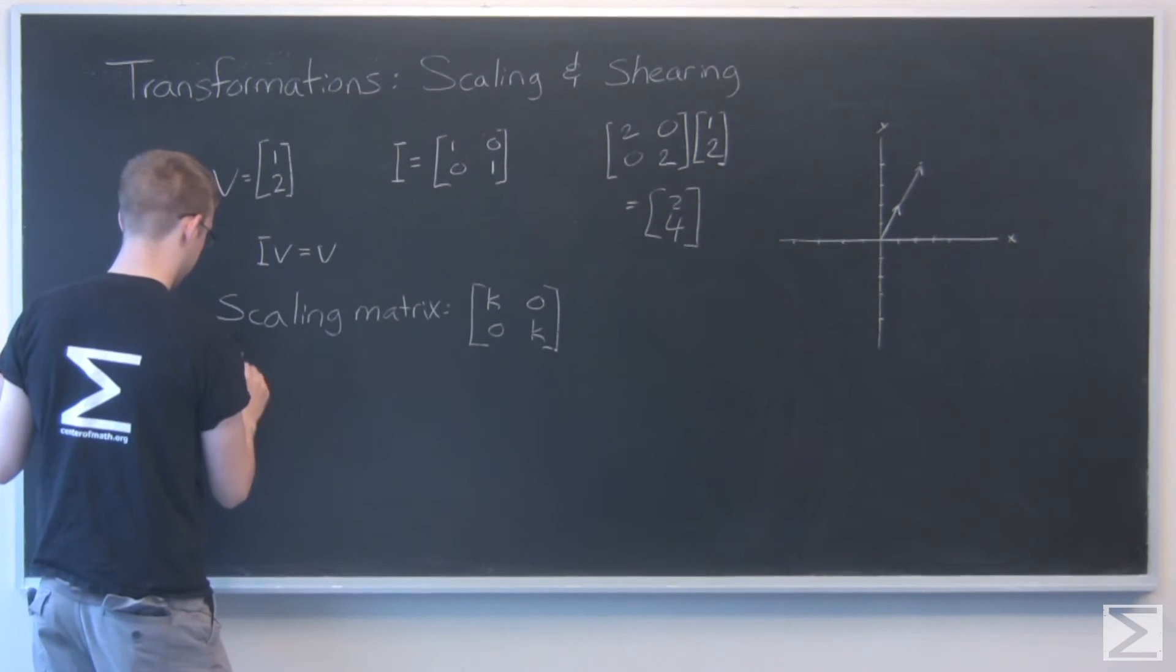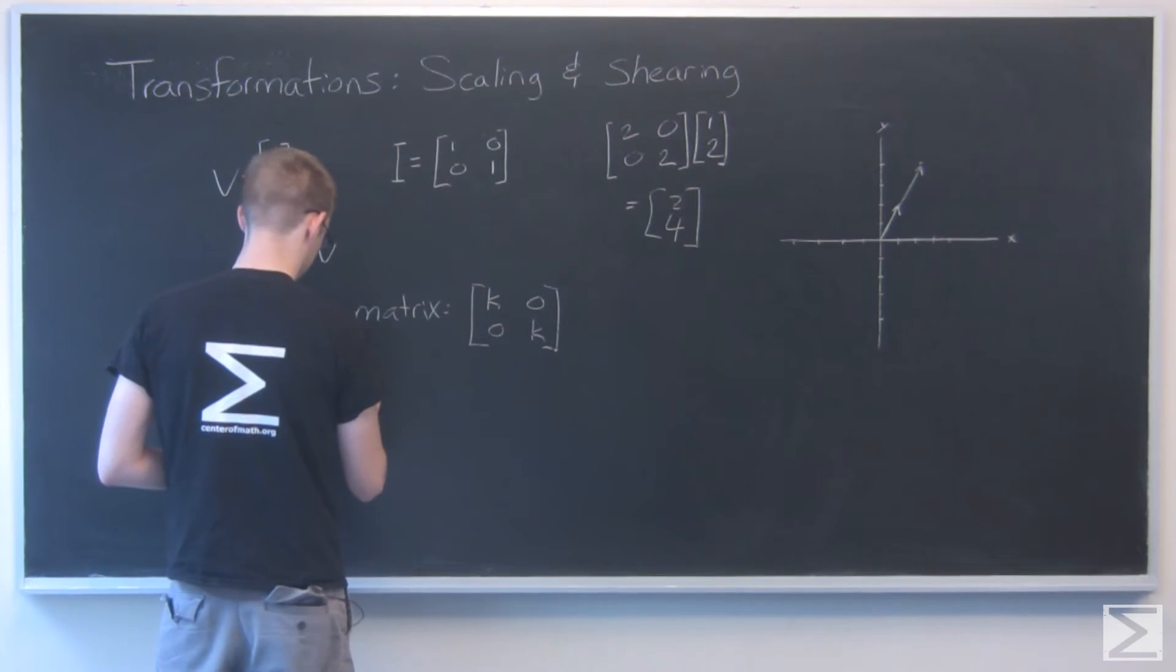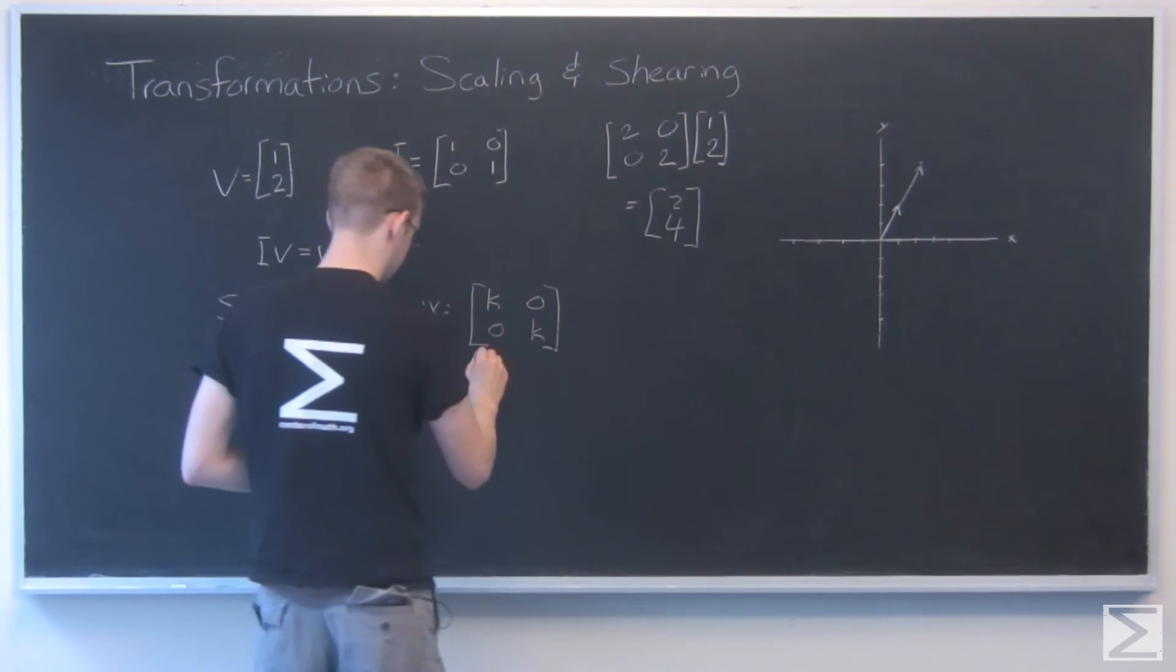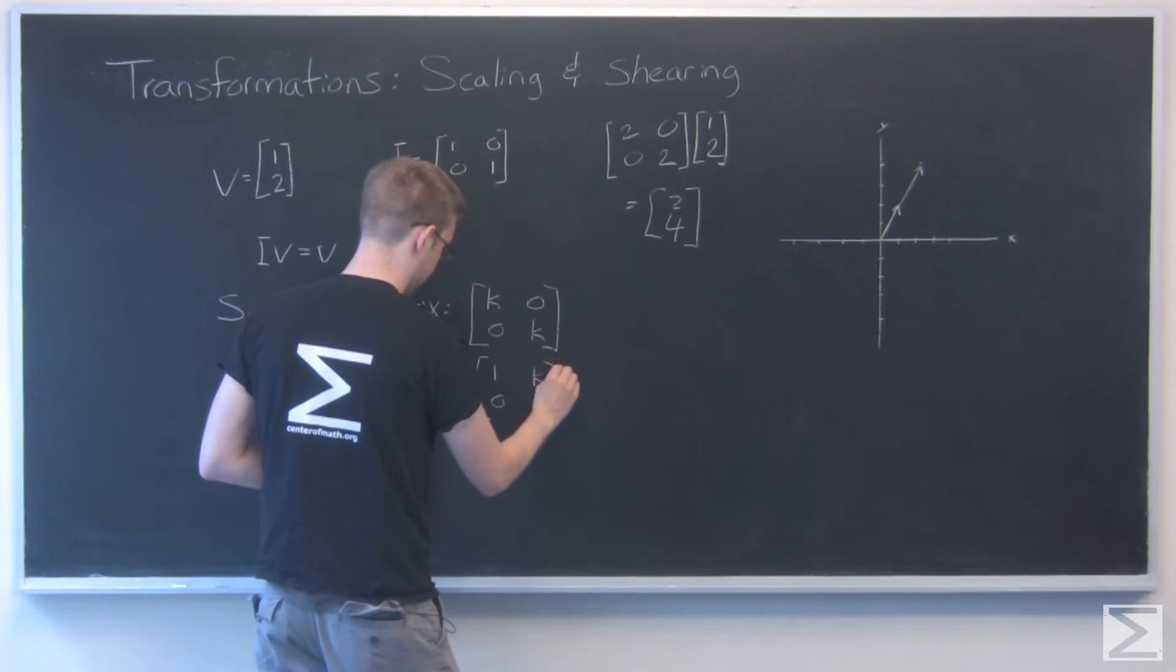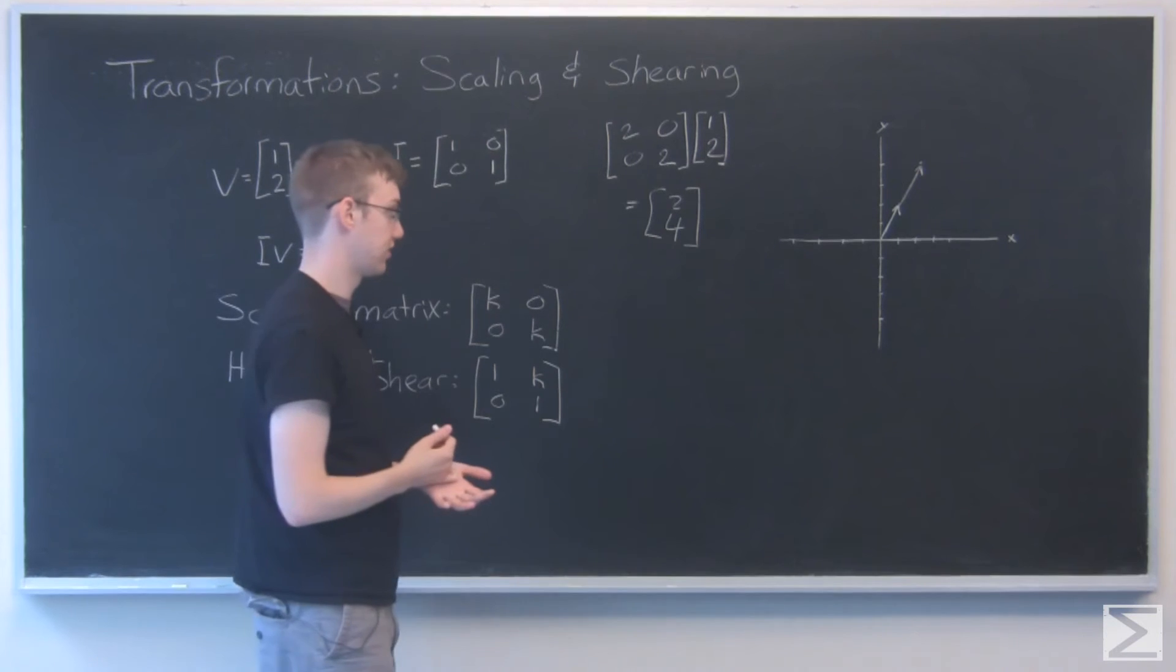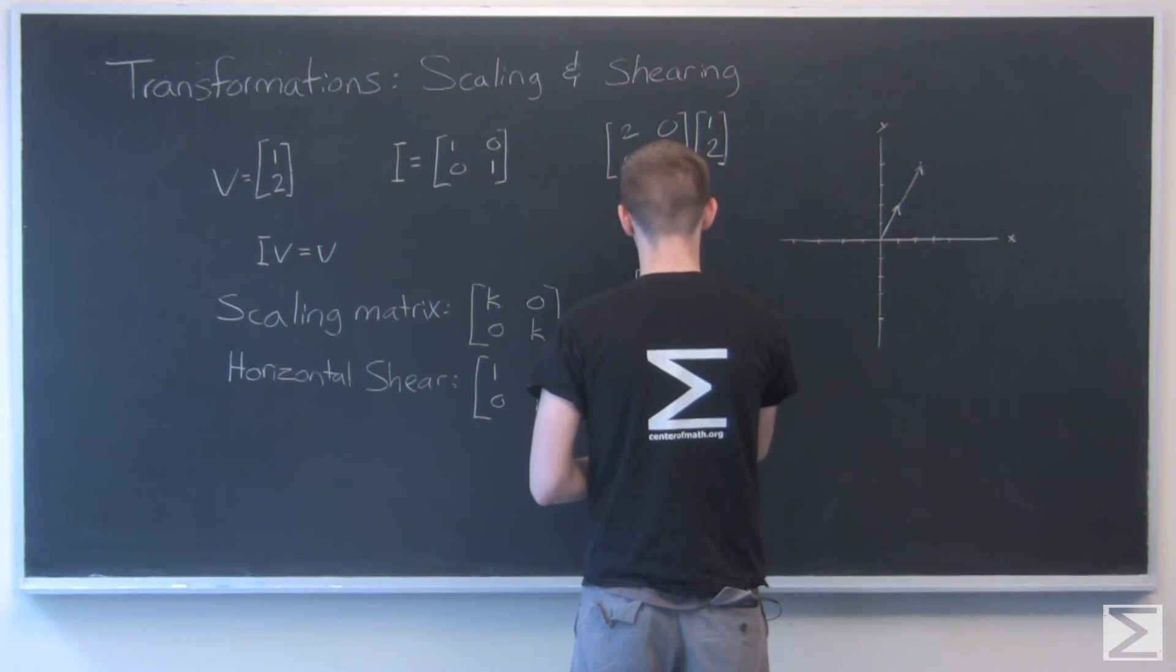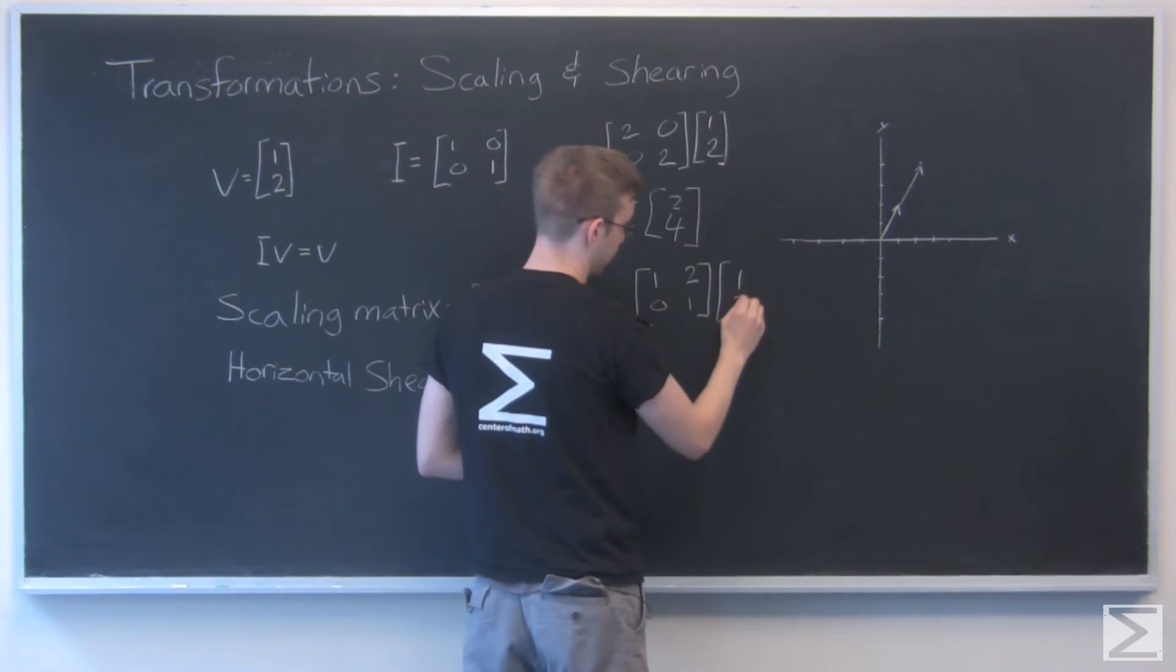For a horizontal shear, it's the identity matrix, but now we have this arbitrary value k right here. So let's look at what that does. Again, I'm going to say to shear it by 2. So 1, 2, 0, 1. That's our transformation matrix. And we have the vector 1, 2 again.